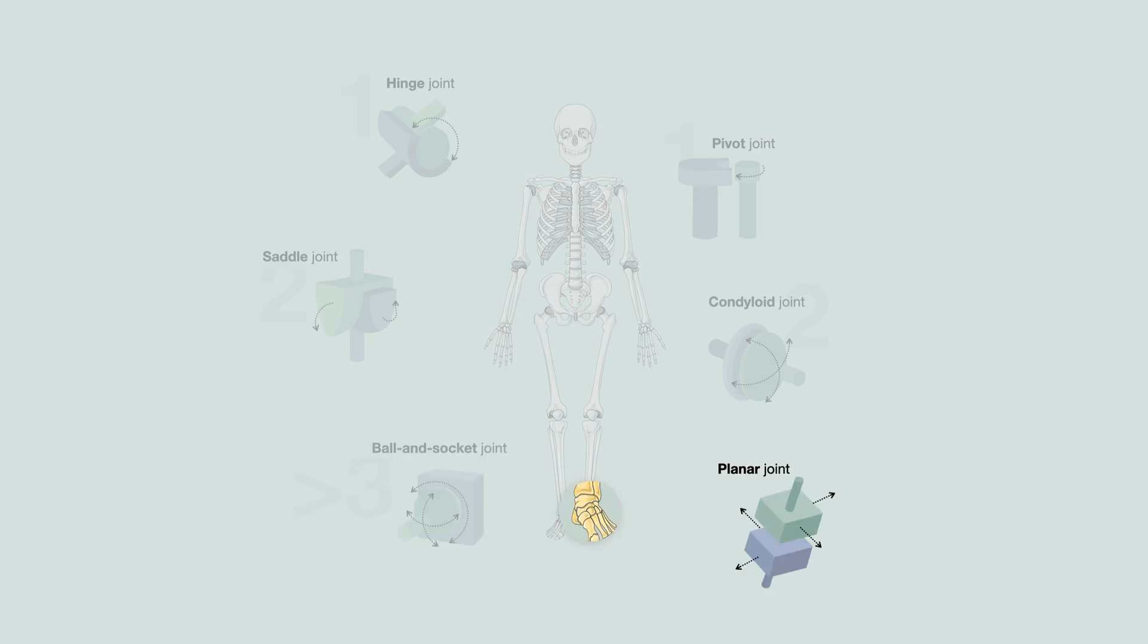Planar joint is also known as a gliding joint. Articulating bones are usually both flat and are of similar size. Movement can occur in multiple directions. It's multiaxial, but is often limited to small movements due to surrounding ligaments. As shown here, the intertarsal joints are an example. Similarly is the intercarpal and acromioclavicular joint.